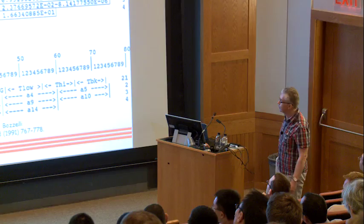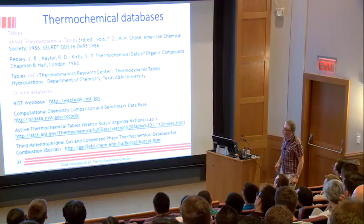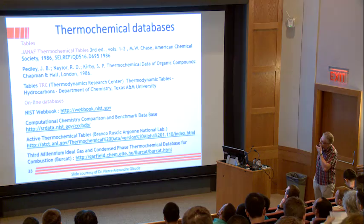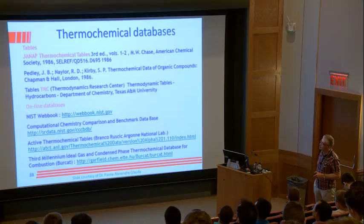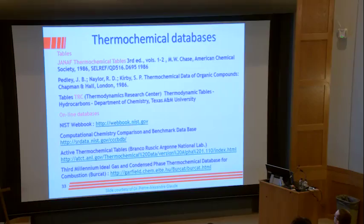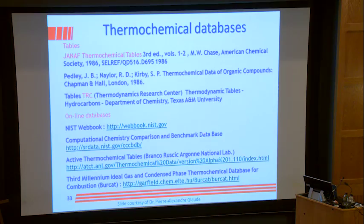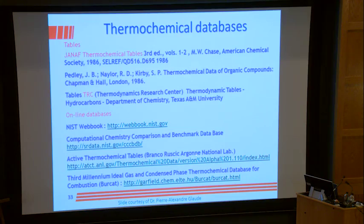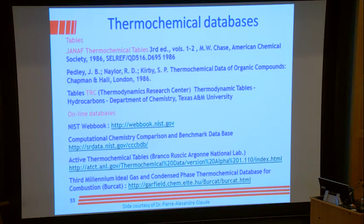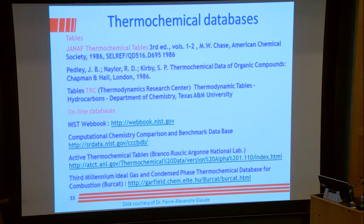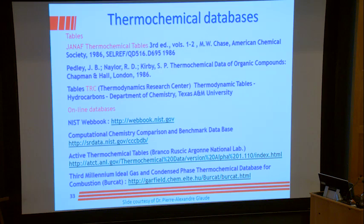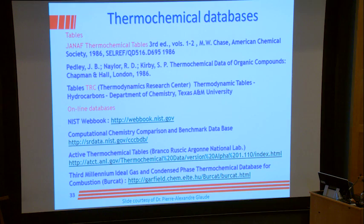Where do we get these tables? They're available from the JANAF thermochemical tables — you can Google them. The NIST WebBook often has thermochemistry for some species. There's also the Computational Chemistry Comparison and Benchmark Database, the Active Thermochemical Tables from Branko Ruscic, and the ideal-gas condensed-phase thermochemical databases for combustion from Alex Burcat, which has since been taken over by someone else.